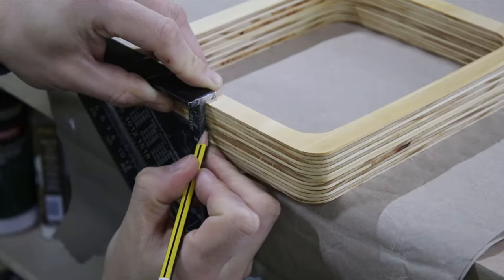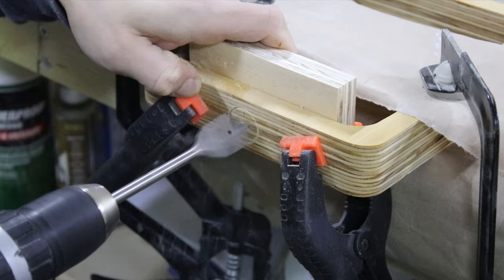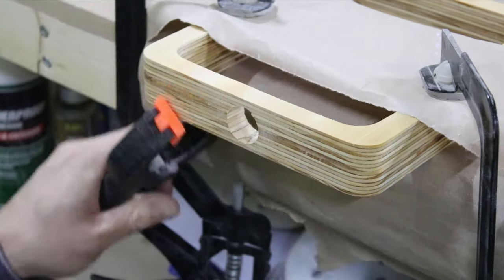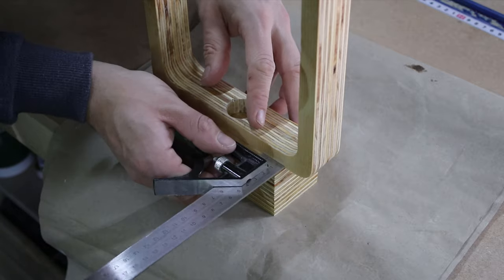Then I marked the middle of the top piece and drilled a 25mm wide hole for the light. I made sure it perfectly sits on the middle of the stand and I mirrored this hole.